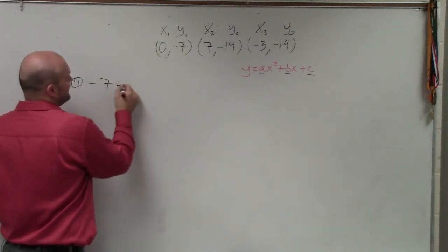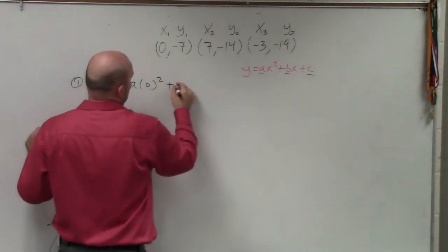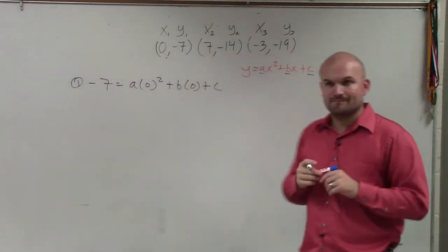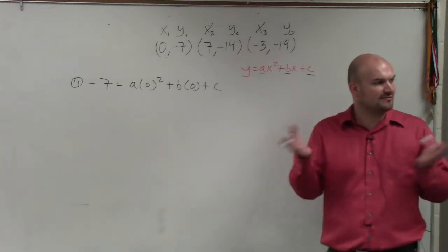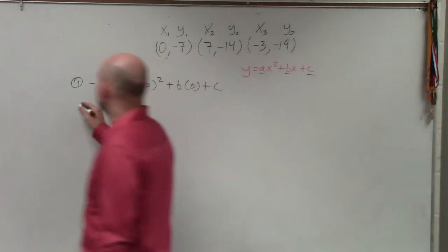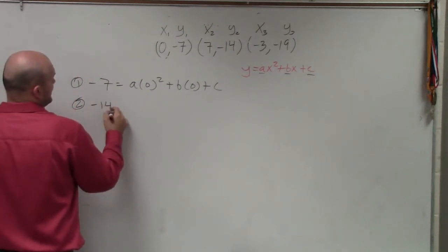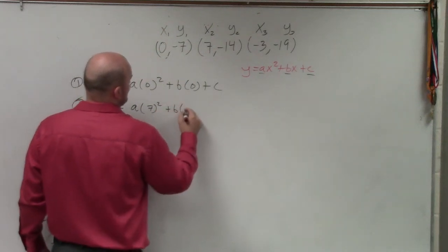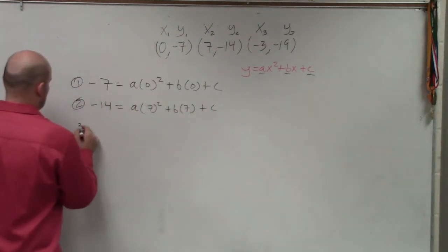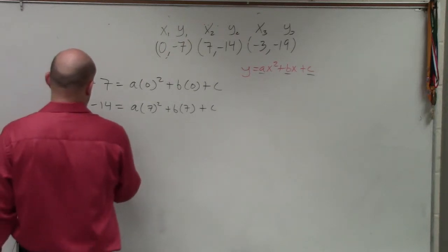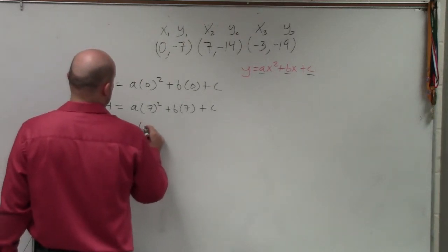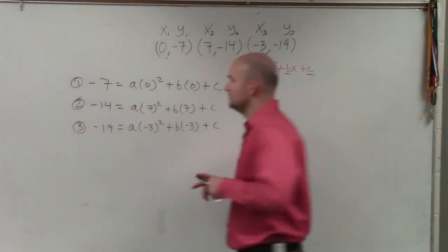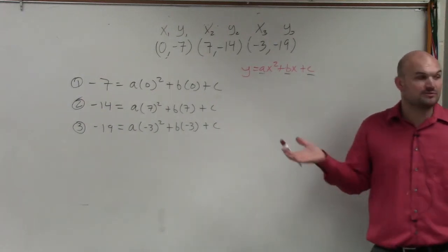So I have 7 equals a times 0 squared plus b times 0 plus c. Does everybody see my equation number one? Oh, I just plugged in x for x and y for y. Number two, we'll have negative 14 equals a times 7 squared plus b times 7 plus c. And number three, I have negative 19 equals a times negative 3 squared plus b times negative 3 plus c. Does everybody see what I did? Just plug in x and y.